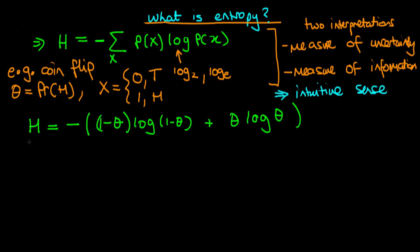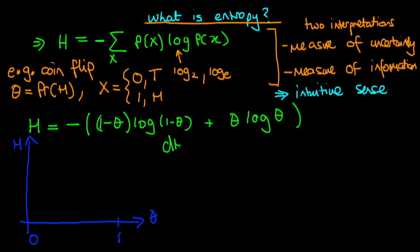What does this entropy function actually look like? We can graph it between theta equals zero and one, but it's a bit hard to imagine what shape it takes. To get a feel for it, we're going to determine if it has any turning points by differentiating the entropy function with respect to theta.